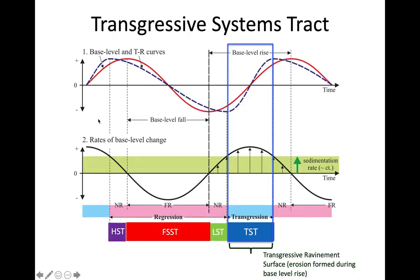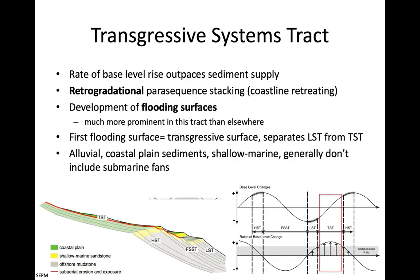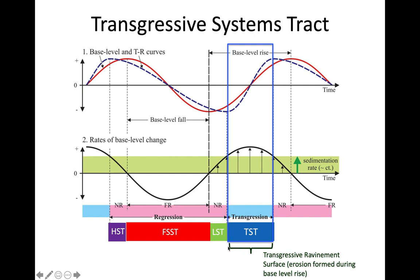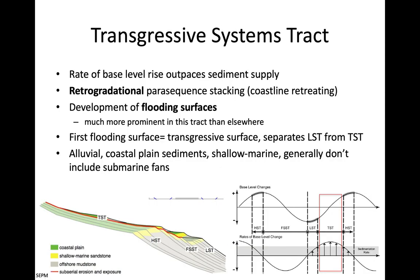Now we flip to the transgressive systems track. Sea level rise starts outpacing sedimentation, so water level gets deeper no matter what. We'll see the ravinement surface, and we'll start to see a retrogradational parasequence stacking — meaning water level is getting deeper, and we'll see a vertical stacking from shallower-water facies to deeper-water facies on top. We start to see the development of flooding surfaces. The first flooding surface is the transgressive surface, which overlies the low stand. It will be an erosive surface. We'll see alluvial, coastal plain, and shallow marine — no submarine fans at this point.